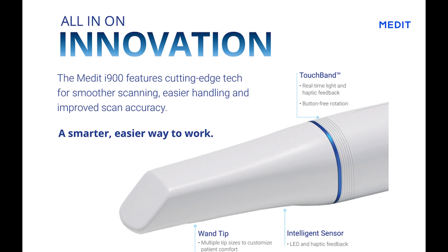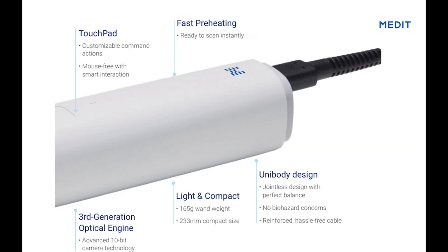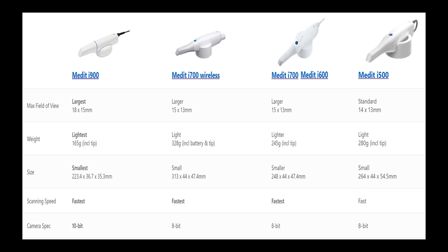Introduction to MediIt's latest scanner model, the I-900. Today, we will explore the latest scanner model from MediIt, the I-900. In this video, we will closely examine the features and advantages of the I-900 by comparing it with previous models like the I-500, I-600, and I-700.